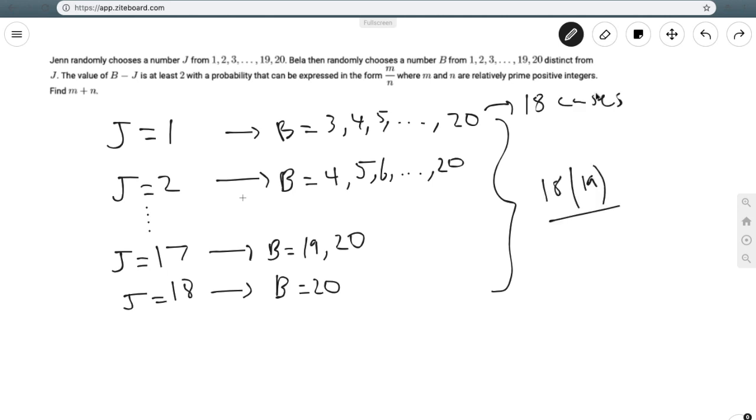So that's 18 times 19 divided by 2, which cancels to give 9 times 19. I'm going to leave it in this form and you'll see why in a second.